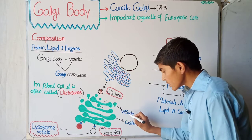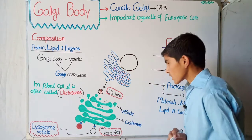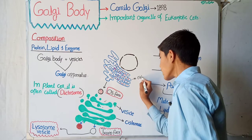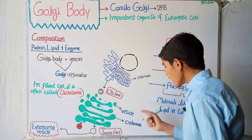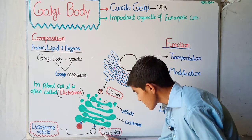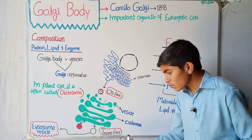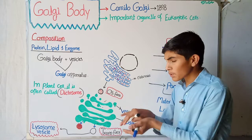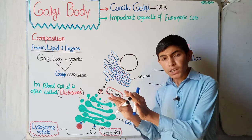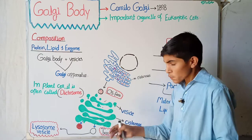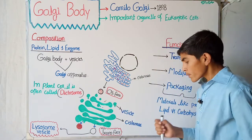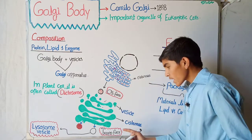The Golgi body has vesicles, and the flat membrane layers are called cisternae — these are also called cisternae, as mentioned in the previous lecture about the endoplasmic reticulum. The Golgi body has two faces: one is the cis face and the second is the trans face. The cis face is the side of the Golgi apparatus toward the endoplasmic reticulum, while the trans face is the side away from the endoplasmic reticulum. 'Cis' means same side and 'trans' means different side.